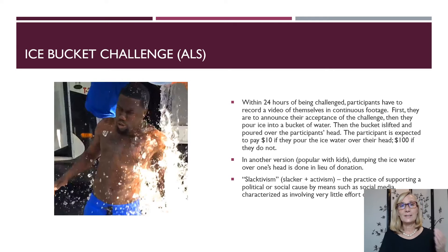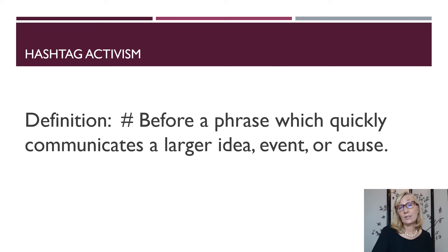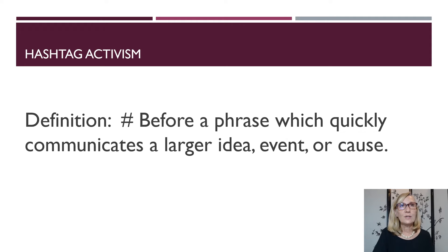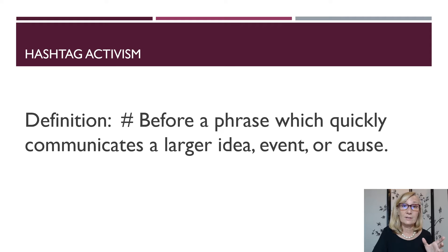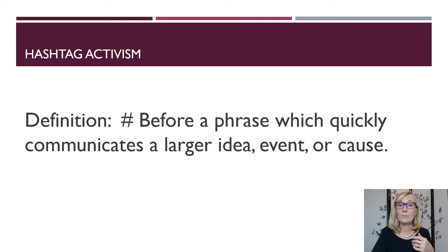So there's an interesting intersection between social activism and internet presence. Another kind of activism is hashtag activism. This is described in your book — they use examples like Black Lives Matter and Occupy Wall Street. At Rutgers University, there was a very interesting movement. A hashtag before a phrase can quickly communicate a larger idea, event, or cause. So if you're on Twitter and you hashtag something, you're signaling a shorthand for something bigger — maybe an event or a cause.